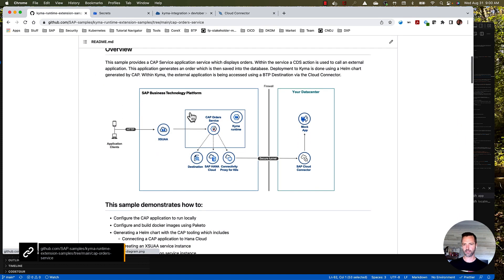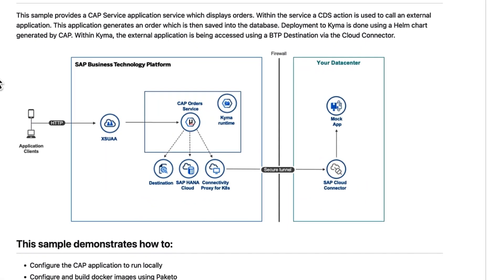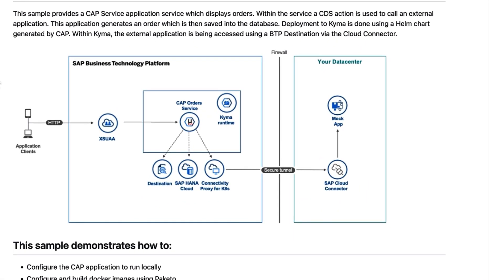Before we start, let's take a look at the solution diagram to get an understanding of how this application is configured. The CAP service will provide us a collection of orders and will be secured using XSUAA. It will use the SAP HANA Cloud database for a persistence layer. Additionally, within the service there's a CDS action defined, which utilizes the destination service and the connectivity proxy to call a mock application that's running locally via the SAP Cloud Connector.